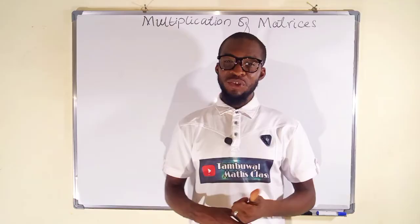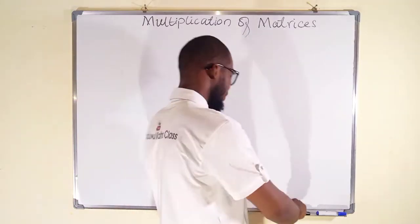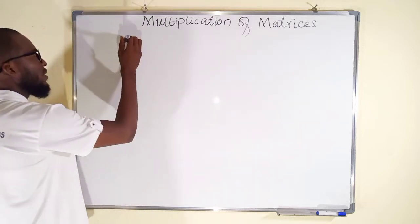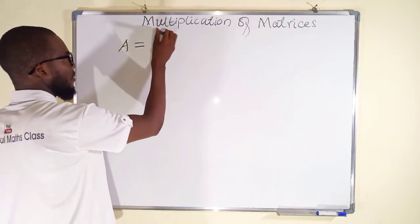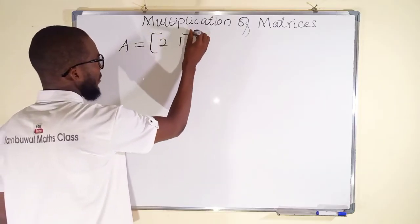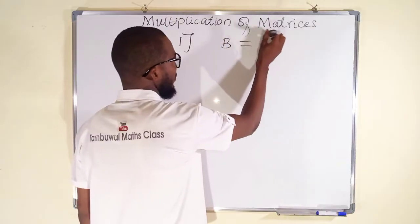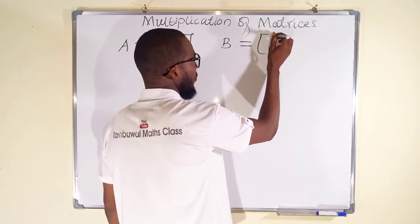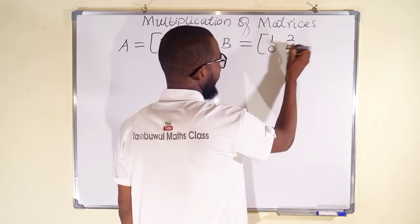Don't forget to share with your learning colleagues. Now let us start. Suppose we want to multiply two matrices together: matrix A that has elements 2 and 1, and another matrix B that has elements 1, 0, 2, and 5.